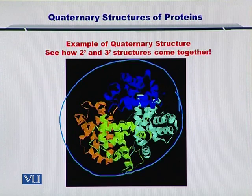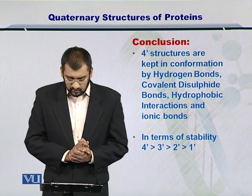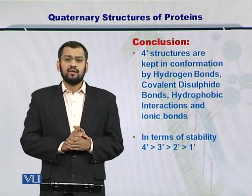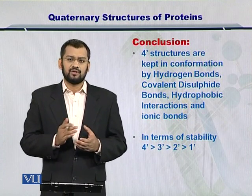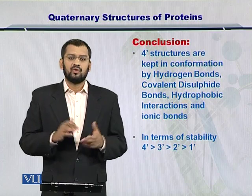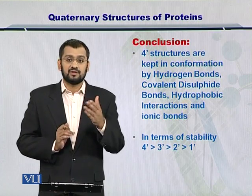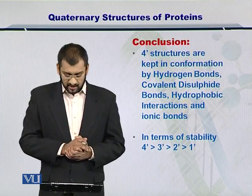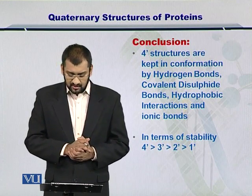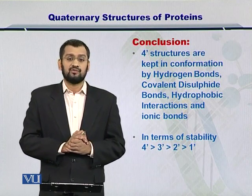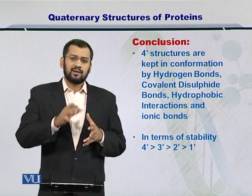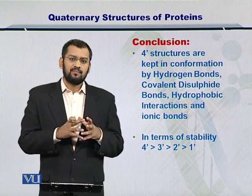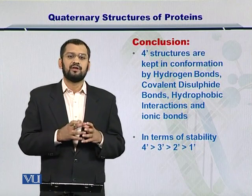Now, instead of the tertiary structure that we discussed earlier, in conclusion the quaternary structures are formed as a result of hydrogen bond formations, covalent bond formations such as disulfide bridges, electrostatic interactions, and hydrophobic interactions as well. These interactions force the monomeric polypeptides to take form and take shape as a single protein.